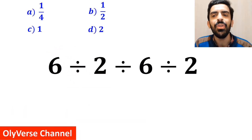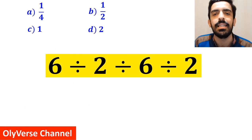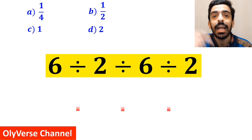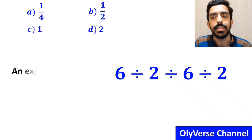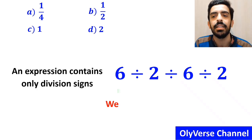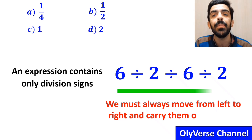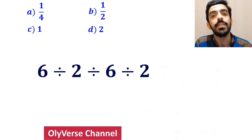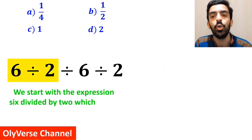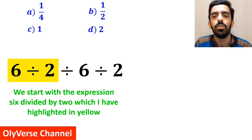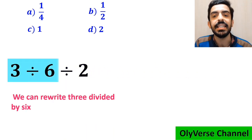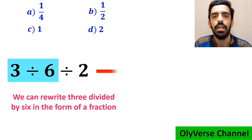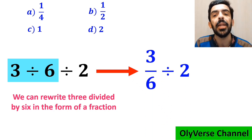Now let me walk you through how to solve this expression properly. As you can see in the image, this expression has 3 division signs. It's very important to note that when an expression contains only division signs, we must always move from left to right and carry them out in order. So first we start with the expression 6 divided by 2, highlighted in yellow, and instead of this expression we get 3 divided by 6, then divided by 2. We can write 3 divided by 6 in the form of a fraction, so this expression becomes 3 over 6 divided by 2.